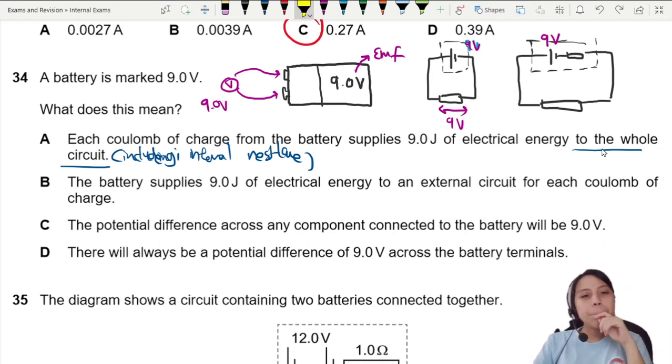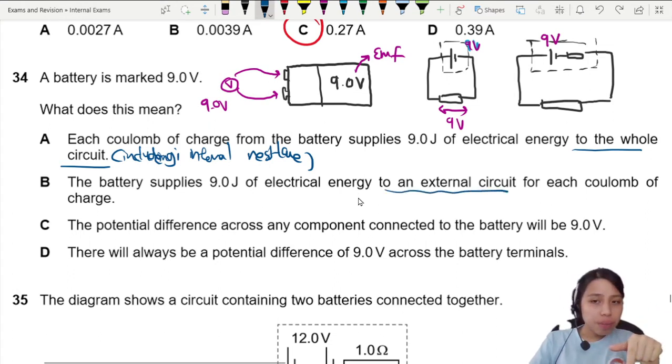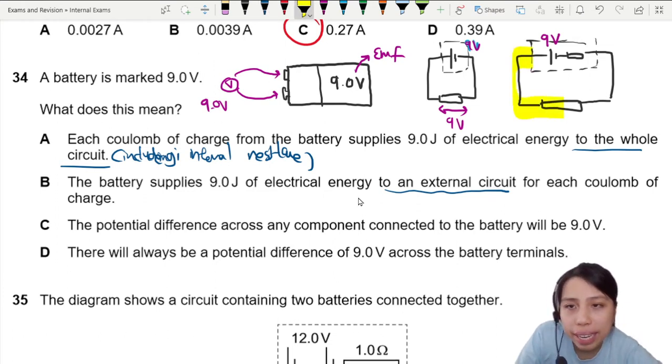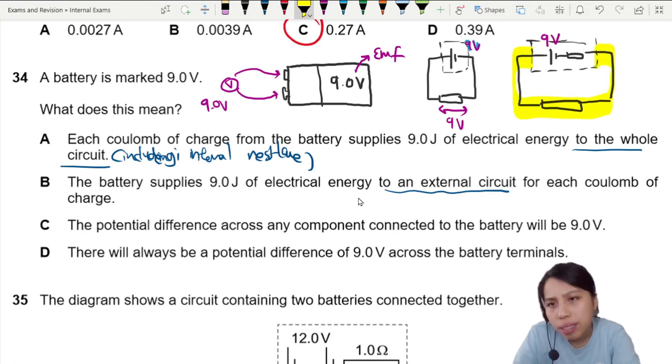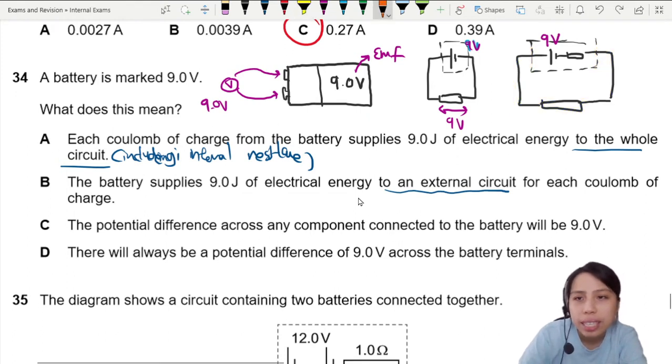Let's look at B first. B says, the battery supplies 9 joules to an external circuit for each coulomb of charge. Now, this one got a bit of a problem already, because you are saying 9 joules for the external. But wait, if there's internal resistance means you have lost energy.